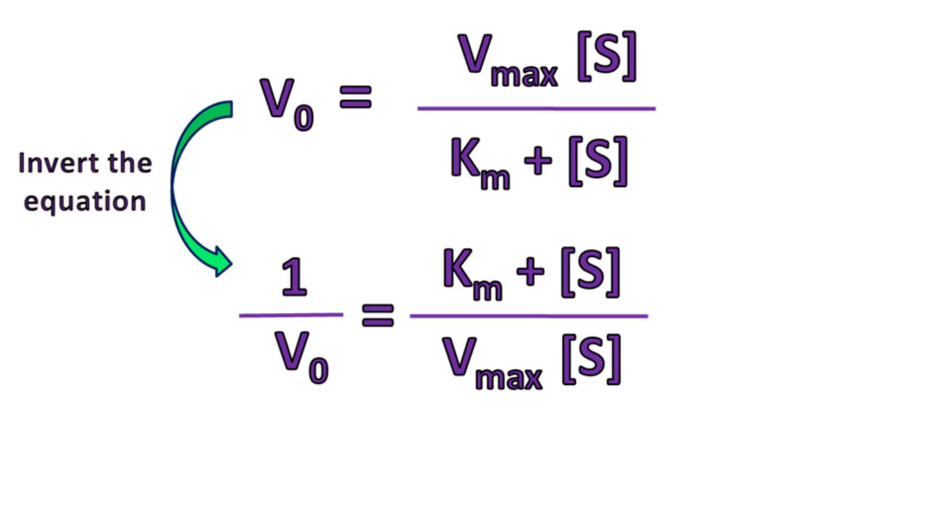If we invert this equation, then we get 1 by V0 is equal to Km plus S upon Vmax into S.